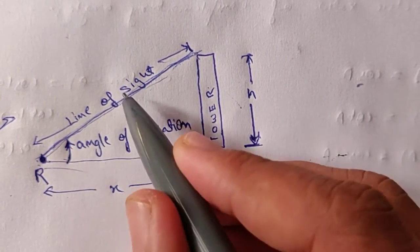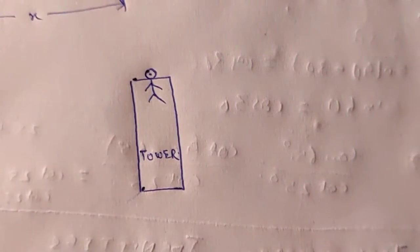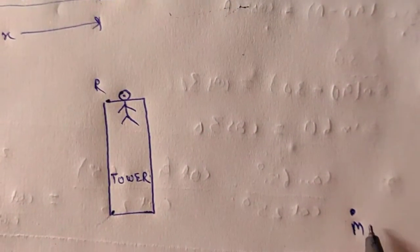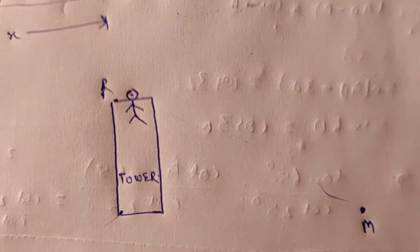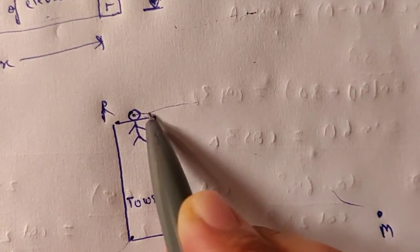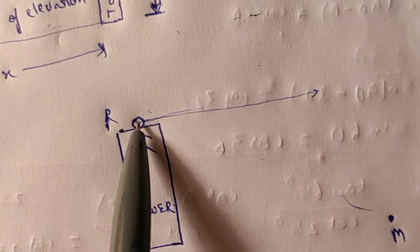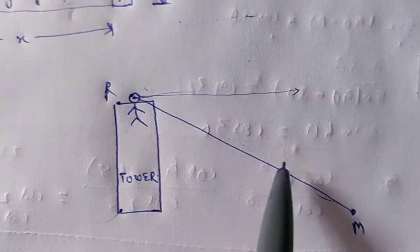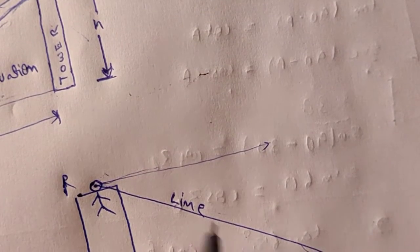Now consider another case: this is a tower, and you are standing on the top of the tower. Your friend Morty is standing below — let's call you R and him M. Your normal sight is horizontal since you are at the top, but you need to look down to see Morty. This line along which you look is called the line of sight.